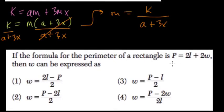The formula for the perimeter of the rectangle is perimeter equals twice the length plus twice the width. Then W can be expressed as, so can we isolate W?